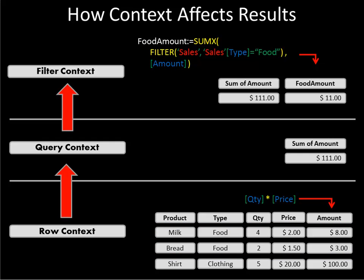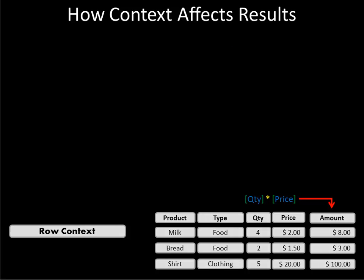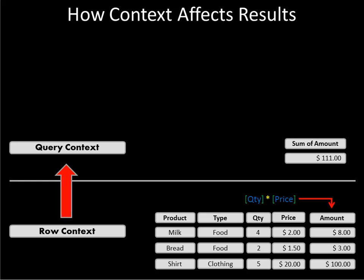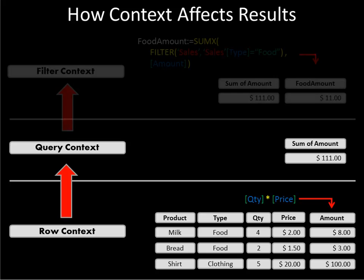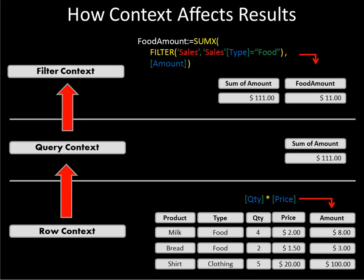This is how contexts affect your calculations, and it's fairly straightforward. Where you'll run into trouble is when you didn't anticipate what would happen in the environment when your calculation runs. Let's look at the same example again. The row context is exactly the same — that's your base case and doesn't change much. The query context is the same — we're selecting the sum of amount, summing all those calculated columns and yielding one value. Our filter context is applied just as before: the food filter is applied against the table, summed up, and we get $11.